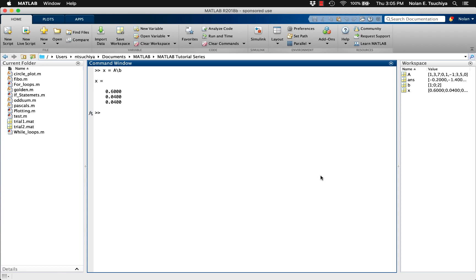By our definition, the vector x contains the variables a, b, and c, so a equals 0.6, b and c are both equal to 0.04.